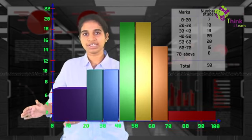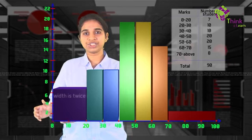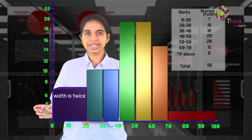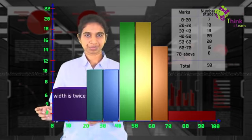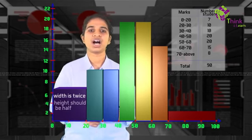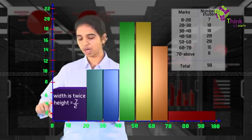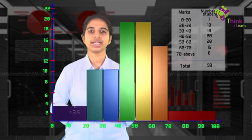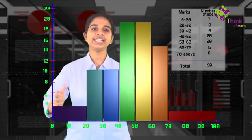Similarly, in the first bar 0 to 20, the width is twice. If I take the minimum width of the bars as 10, this is twice that. So height should be half. So instead of 7, what you'll draw is 3 and a half. Because 0 to 20 is actually double the range.